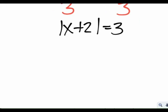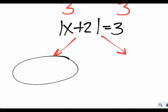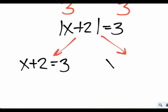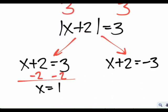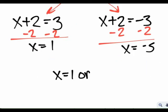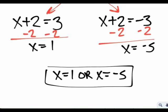The next step is to split. On the left side: x plus 2 equals positive 3 — we just get rid of the absolute value bars. On the right side: x plus 2 equals negative 3. So we have two separate equations. Subtract 2 on both sides of the left: x equals 1. Subtract 2 on both sides of the right: x equals negative 5. There are two possible solutions: x equals 1, or x equals negative 5.